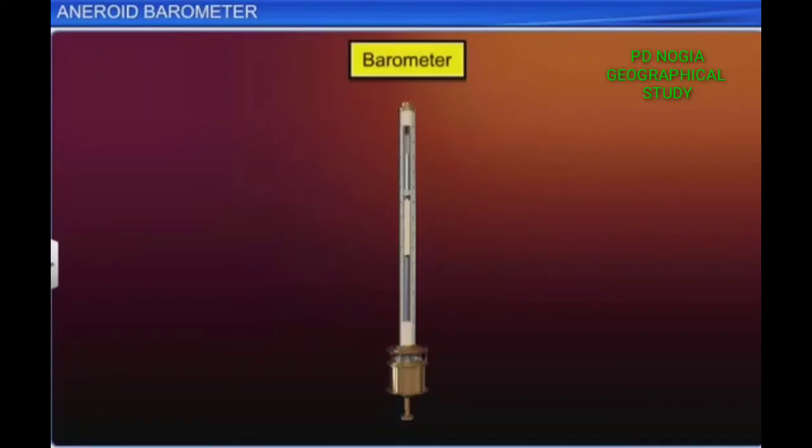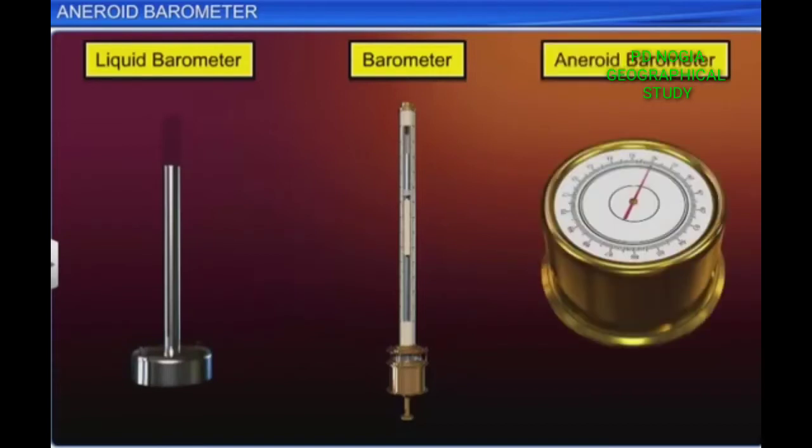A barometer is an instrument used to measure atmospheric pressure. Barometers can be broadly classified into two types: liquid barometers and aneroid barometers.